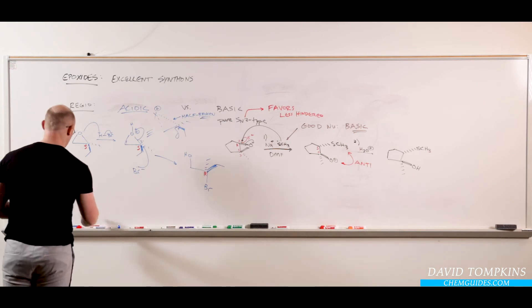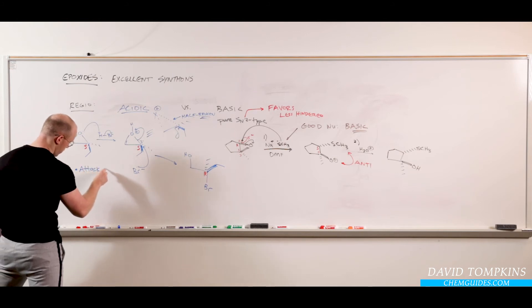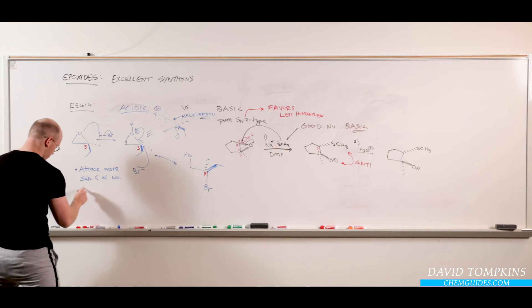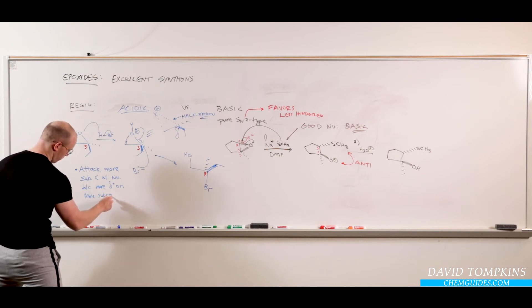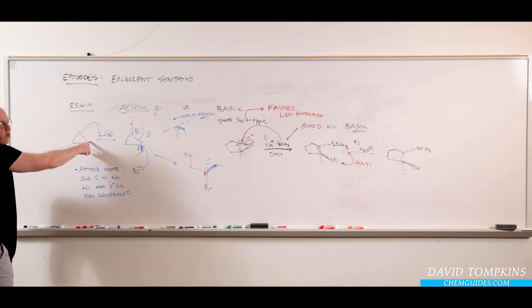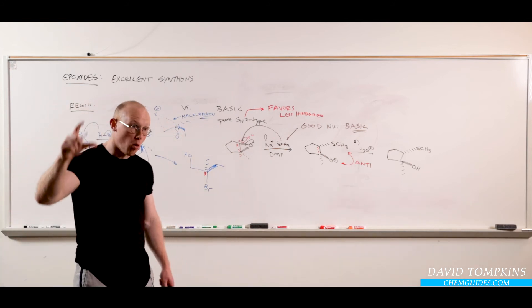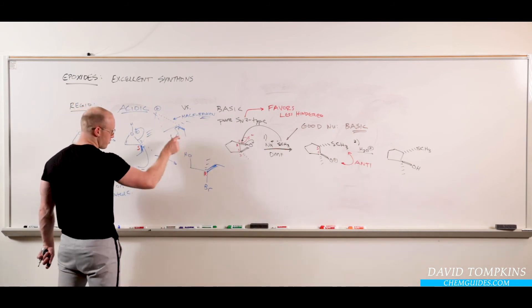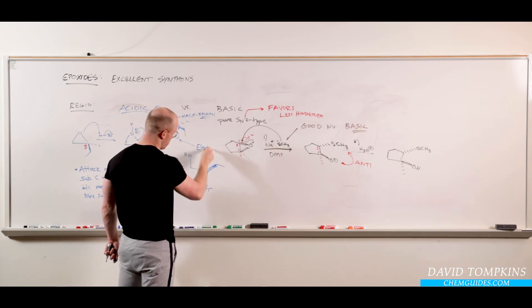So the stereochemistry still is inversion SN2 type result. But the regioselectivity now is that you attack the more substituted carbon with the nucleophile because there's more electrophilic character on this carbon. So it is not that there's more positive charge here necessarily before, but upon protonation, that's what really starts to weaken this bond. And it selectively weakens the bond from the more substituted center more. It makes it longer and it's easier to break. That's another way of saying it better stabilizes positive charge so it is more electrophilic. It's an electrophilic tertiary carbon.